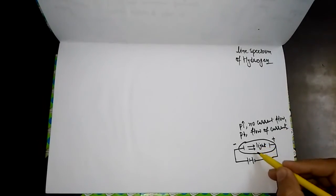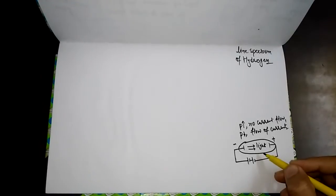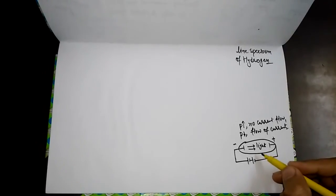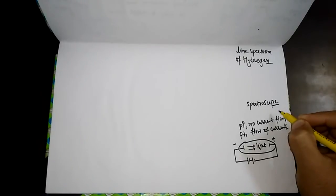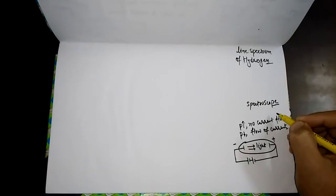The color of light depends upon the nature of the gas. When this emitted light is analyzed by the spectroscope — a device used to analyze the behavior of light — they found that the spectrum consists of a large number of lines, which are grouped into different series.